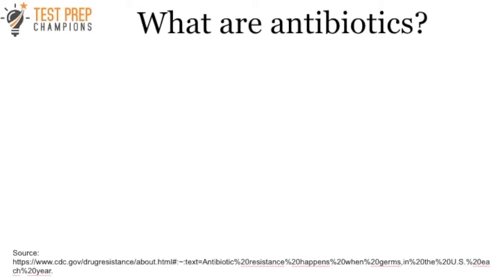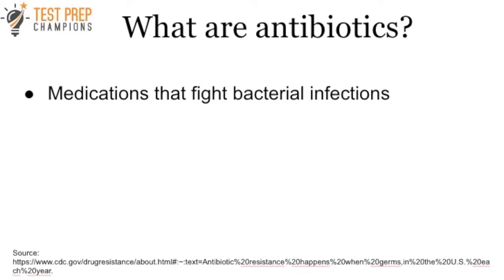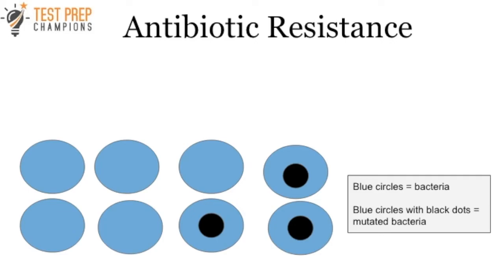This brings us to antibiotics. They are medications that fight bacterial infections. Now this leads to a really important phenomenon called antibiotic resistance. Suppose all these bacteria are in the body, and randomly some of them get mutations in their DNA. Those mutations just happen by chance to protect certain bacteria against the antibiotic.